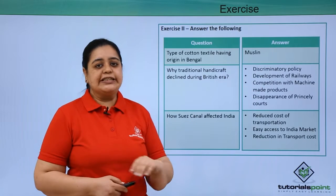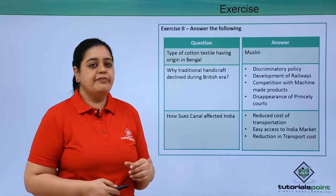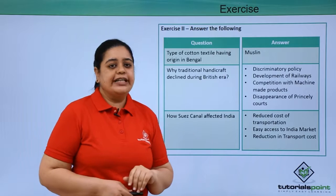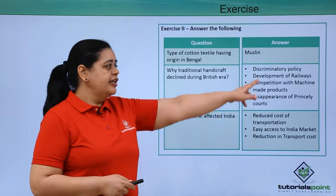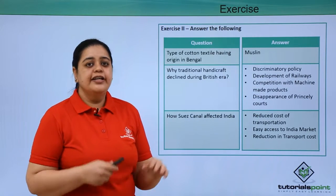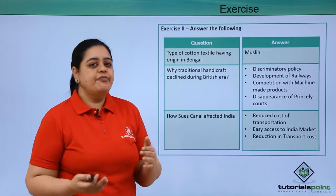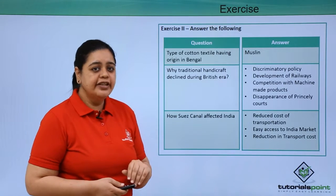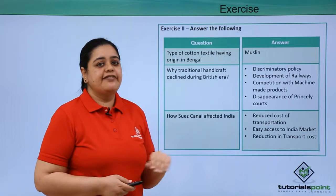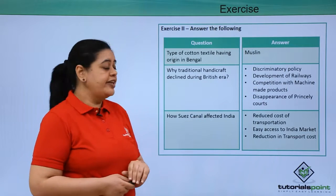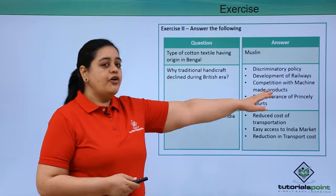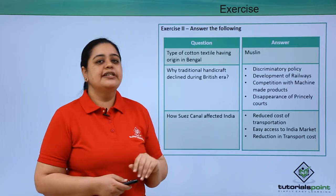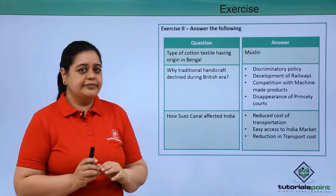Muslin was the fine cloth from Bengal which we spoke about. The traditional handicraft decline in India was because of a discriminatory tariff policy which was being levied, which made goods expensive. There was also the development of railways, competition with machine-made products, and the disappearance of princely courts.